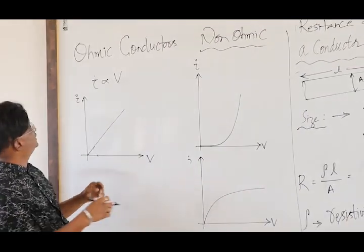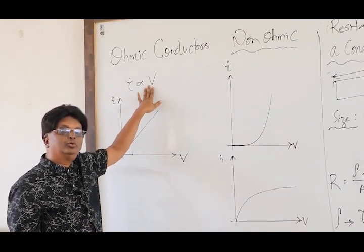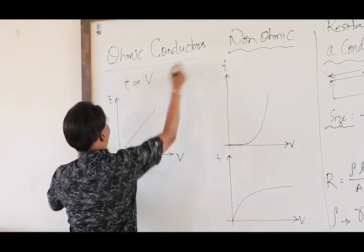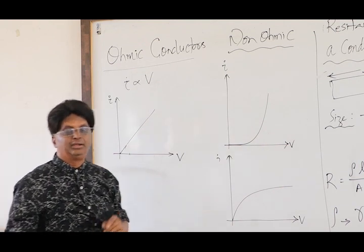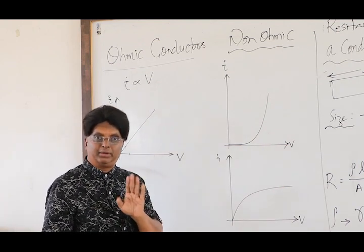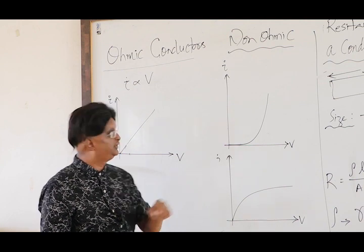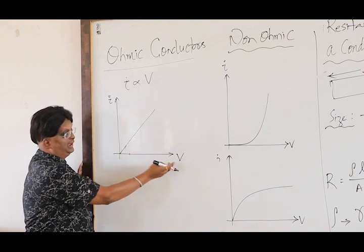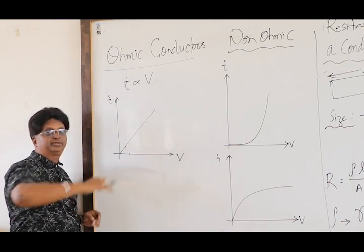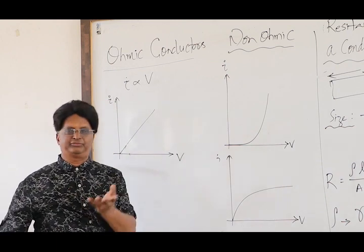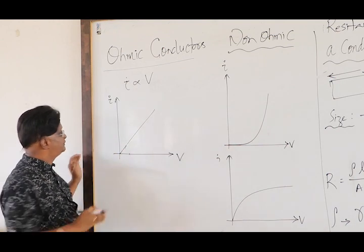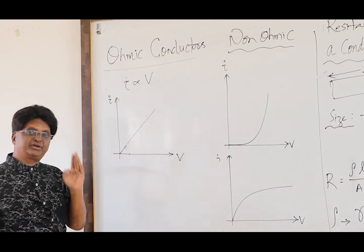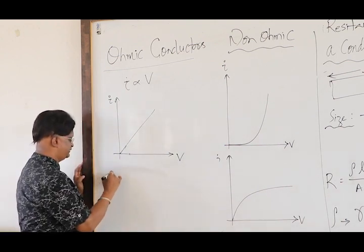I ∝ V is Ohm's Law. What are ohmic and non-ohmic conductors? An ohmic conductor is one which obeys Ohm's Law — meaning it obeys I ∝ V, that is linearity. If we draw a graph between voltage on x-axis and current on y-axis, it is a straight line passing through the origin. All such conductors are called ohmic conductors, and the best examples are metals.